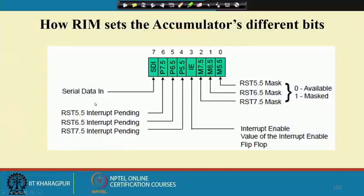The rest of the bits give the current interrupt mask setting in the processor — useful if you want to change the mask setting slightly without disturbing others. In the diagram, whatever is available at the SID pin will appear in the SDI bit, and pending interrupt bits for RST 5.5, 6.5, and 7.5 are indicated accordingly.